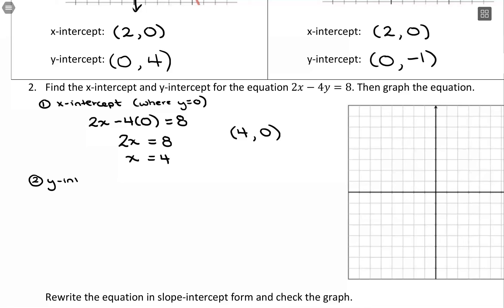For the y-intercept, it's the same idea, it's just that we're going to plug in x equals 0. So we'll have 2 times 0 minus 4 times y equals 8. 2 times 0 is just 0, so that part's going to disappear, and we'll just have negative 4y equals 8. Divide by negative 4, and that's a negative 2. So I'll have a y-intercept of x is 0, y is negative 2.